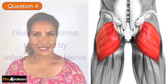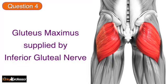Question 4: the gluteus maximus, the big muscle in your buttocks, is supplied by the inferior gluteal nerve.